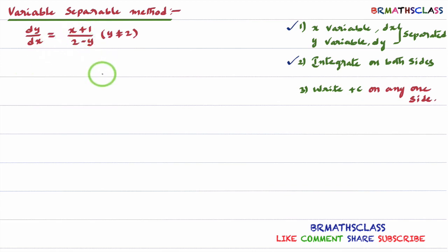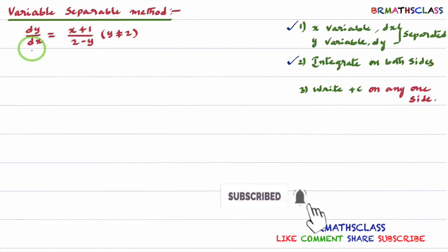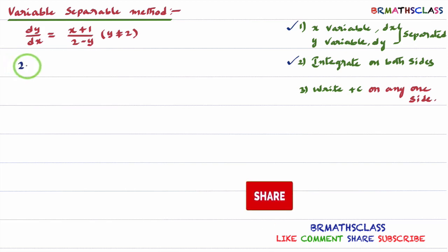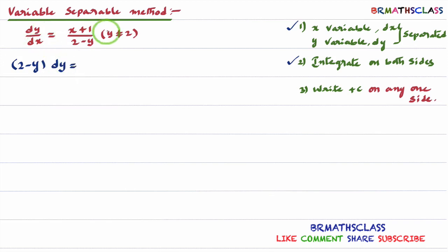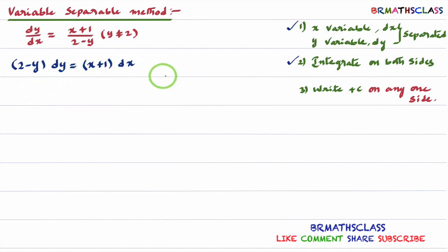We solve this differential equation by the variable separable method. First step: separate x variable dx and y variable dy. Take dx to one side so that x terms and dx are together: (x + 1) dx. Take (2 − y) to the other side so y terms and dy are together: (2 − y) dy. So we get (2 − y) dy equal to (x + 1) dx. First step is complete.